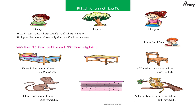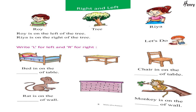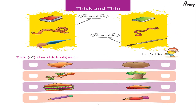Right and Left: Roy is on the left of the tree, Rhea is on the right of the tree. Let's do — write L for Left and R for Right.